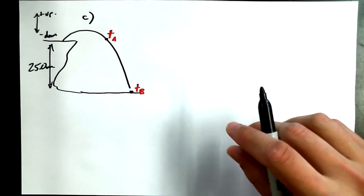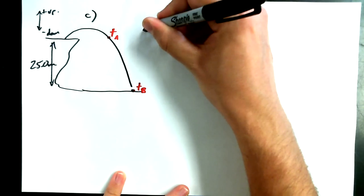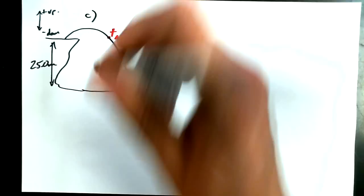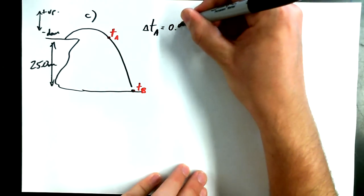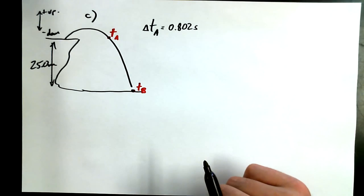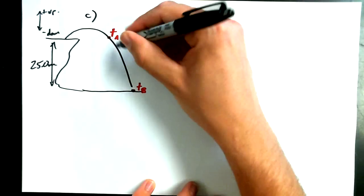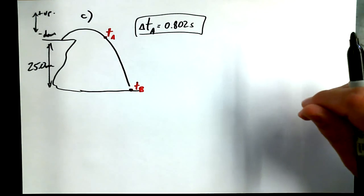Now we need to figure out how long it takes to get from time A to time B. And if I know how long it takes to get to time A, and then I figure out how long it takes to get from time A to time B, what do I do to those two values? Add them up. So, I'm going to label up delta T-A, which we found once before.